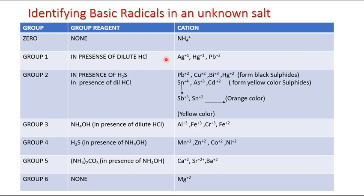When we subject an unknown salt to a reaction in the presence of dilute HCl and get a general result, that result infers that Group 1 is present. In Group 1, the specific ions — Ag, Hg, and Pb — cannot be predicted immediately from that result alone.